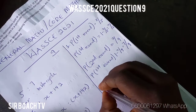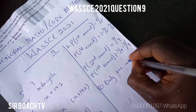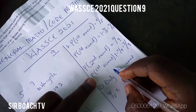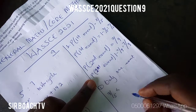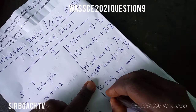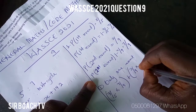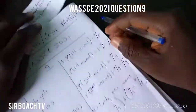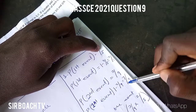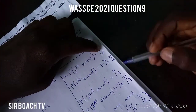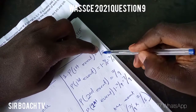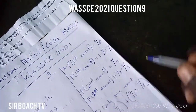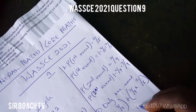The probability of winning only one event is: the probability of winning the first event times not winning the second, plus winning the second times not winning the first. That is 3 over 5 times 7 over 9, plus 2 over 9 times 2 over 5. Simplifying, we get 7 over 15 plus 4 over 45.